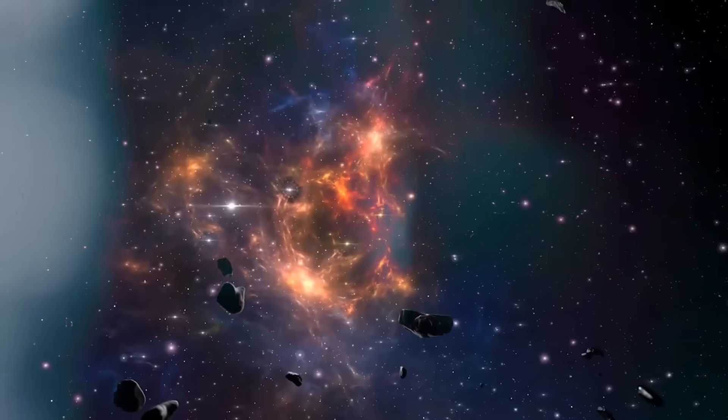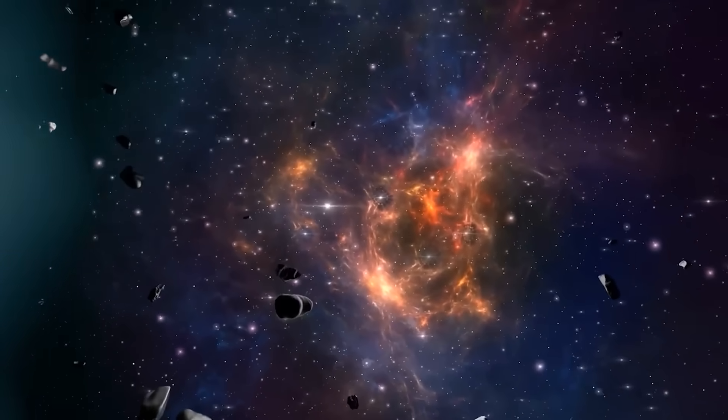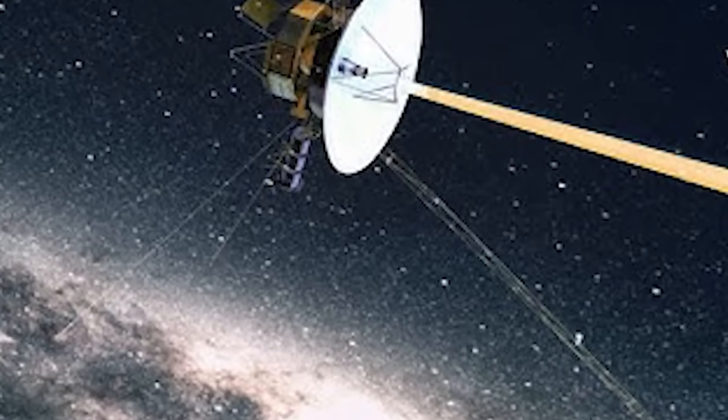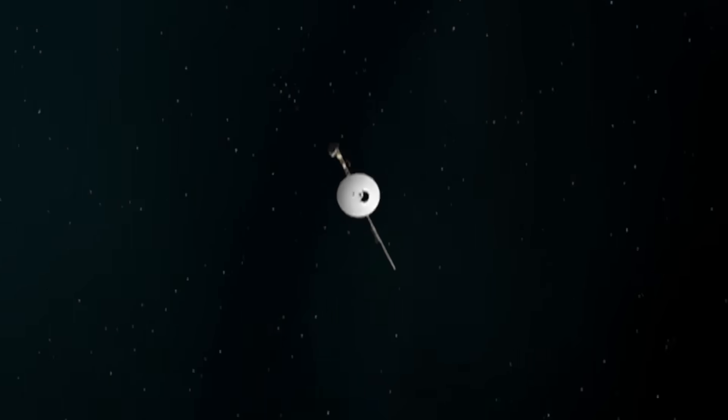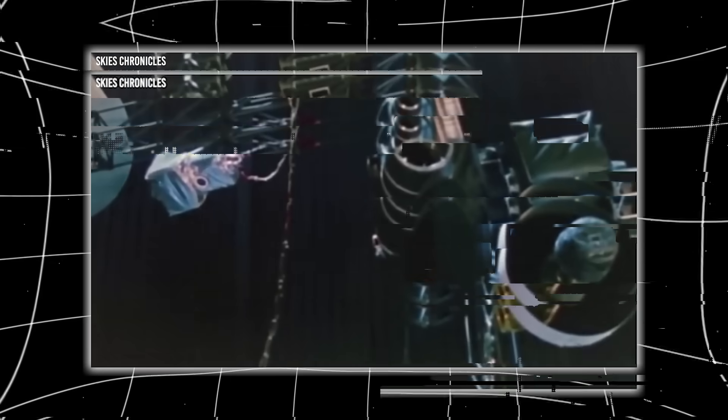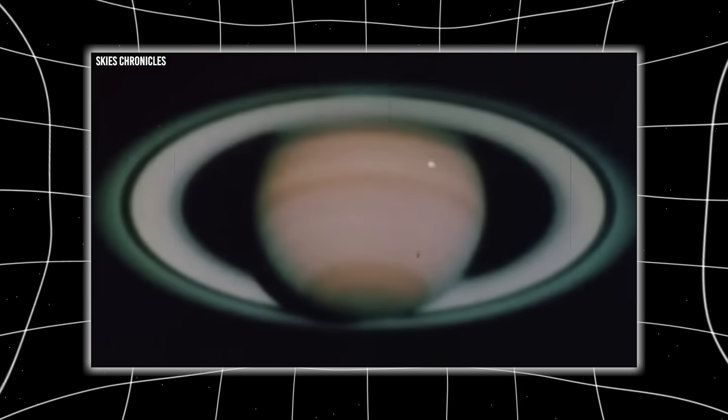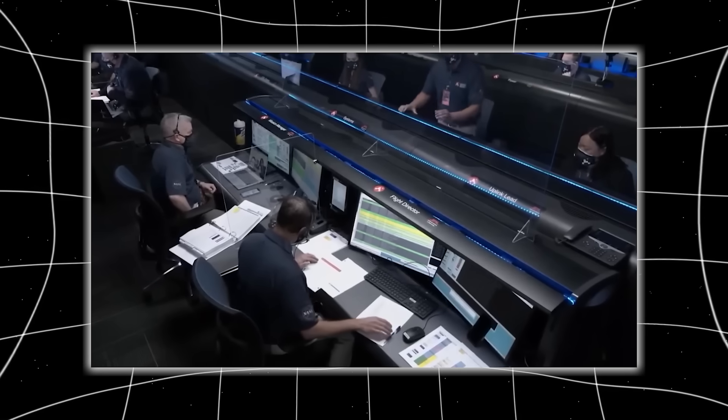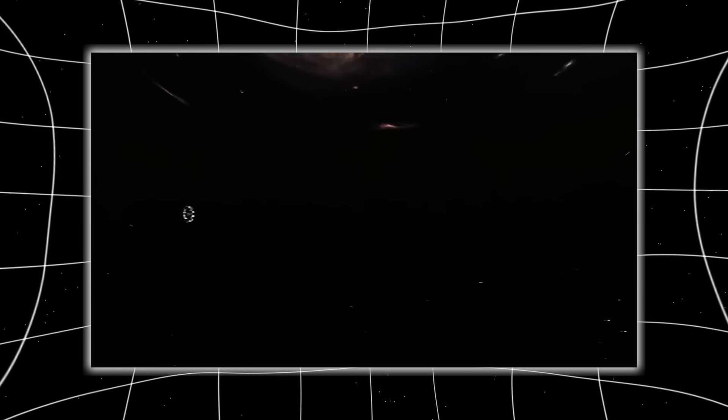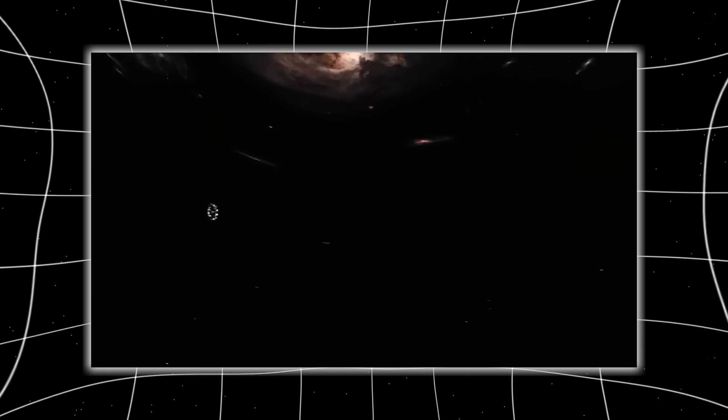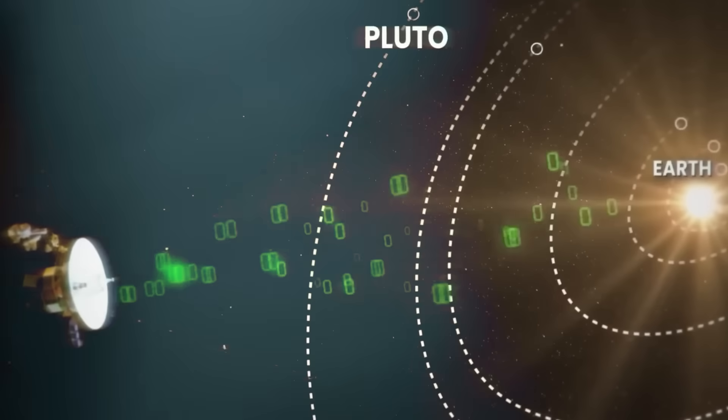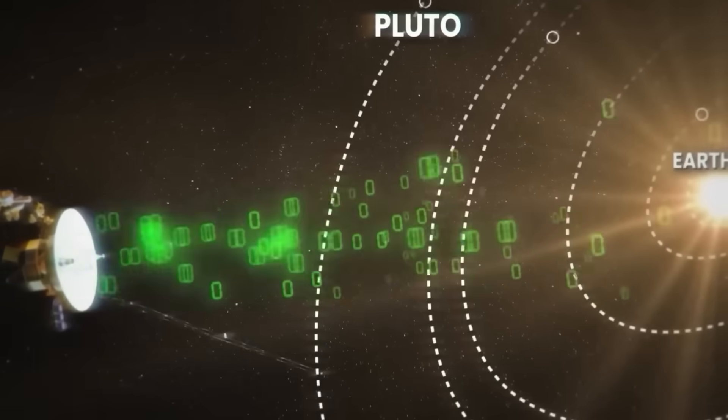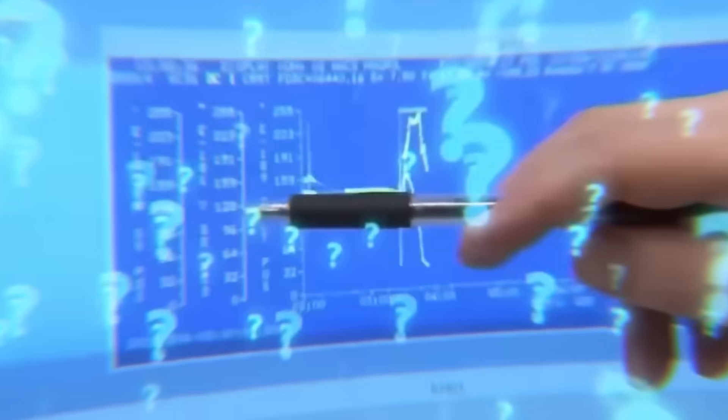But there's more. The path of this anomaly wasn't a straight line. It curved, dipped, and paused. Movements consistent with course correction. If it were random turbulence, it wouldn't show such refined behavior. Some researchers are now theorizing that Voyager might have crossed through a field, an area in space that reacts to its presence. Think of it as a cosmic sensor field, where entering it activates something else. A trigger. If that's the case, then Voyager didn't just observe something strange, it may have activated it. And that thought alone has astronomers both thrilled and terrified.